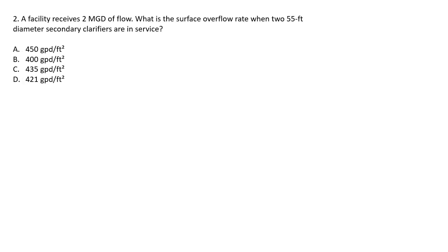Question two: a facility receives 2 MGD of flow. What is the surface overflow rate when two 55-foot diameter secondary clarifiers are in service? A) 450 gallons per day per square foot, B) 400 gallons per day per square foot, C) 435 gallons per day per square foot, or D) 421 gallons per day per square foot.